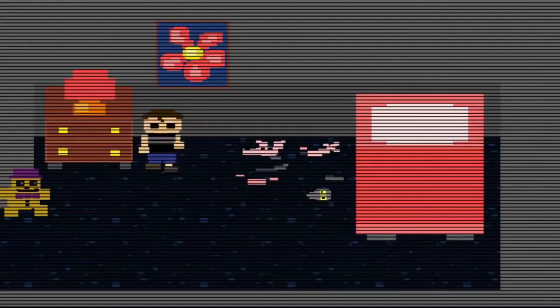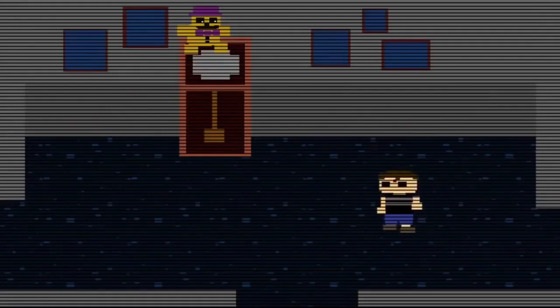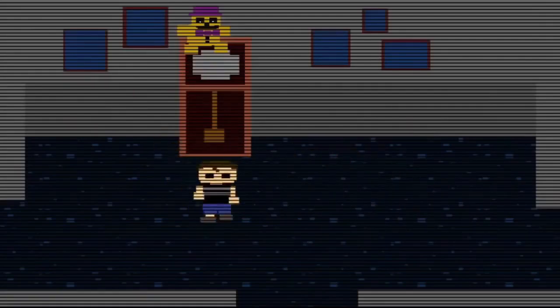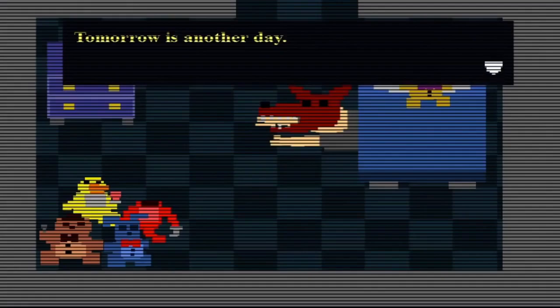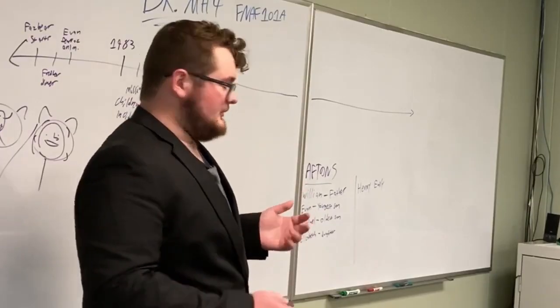There is a playable cutscene in one of the games where you are playing as a young Evan Afton walking through the Afton household. Evan Afton is scared by Michael jumping out from behind their recliner with a foxy mask on. And this is showing how much Evan is tormented by Michael.